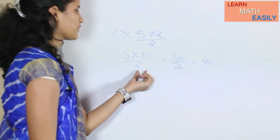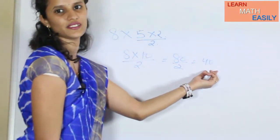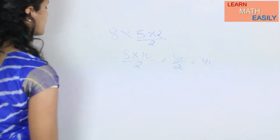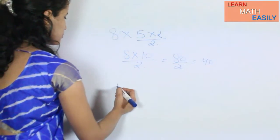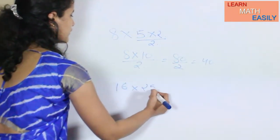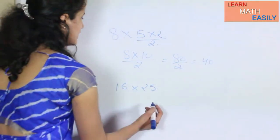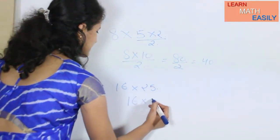Here in the same way, if I have to multiply any number, suppose 16, with 25, what I will do is multiply 16 into 100 divided by 4, because 100 divided by 4 is nothing but 25.